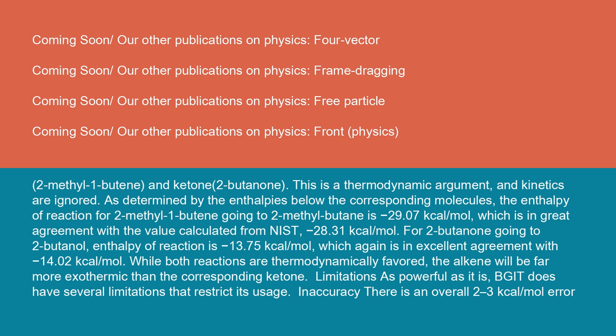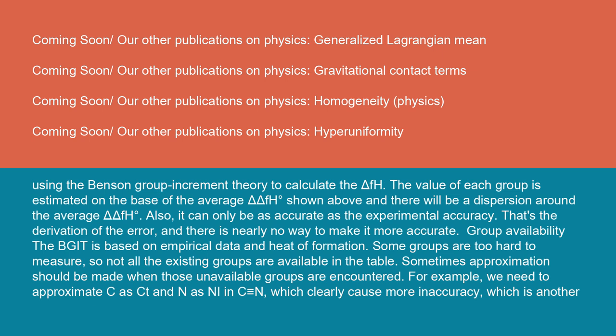Limitations: As powerful as it is, BGIT does have several limitations that restrict its usage. In accuracy, there is an overall 2-3 kcal/mol error using the Benson group increment theory to calculate the ΔH°f. The value of each group is estimated on the basis of the average ΔΔH°f shown above, and there will be a dispersion around the average ΔΔH°f. Also, it can only be as accurate as the experimental accuracy. That's the derivation of the error, and there is nearly no way to make it more accurate.